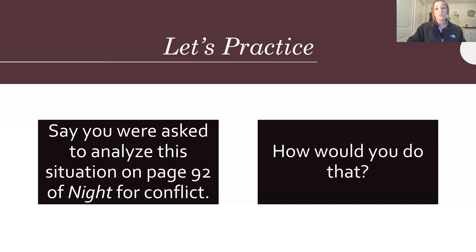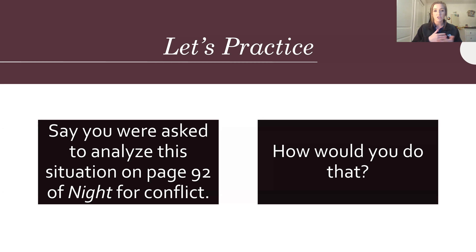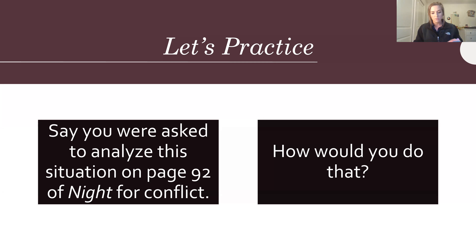So we're going to get into actually practicing this. Everyone is going to turn with me, and I'm going to model this thought process for you guys, kind of like we've done in the previous review sessions. We're going to work through how we would go about analyzing something for conflict. Say you were asked to analyze the situation on page 92 of Night for conflict — everyone needs to flip to page 92, and I'm going to read basically what takes place on this page.